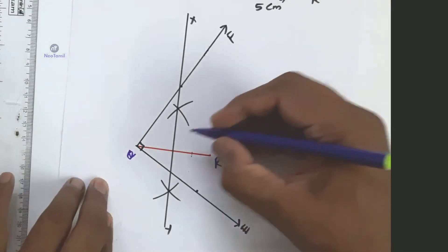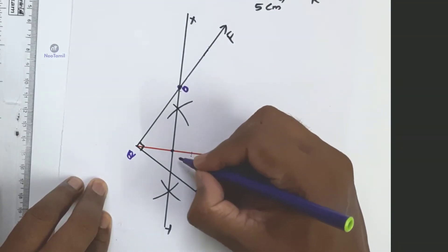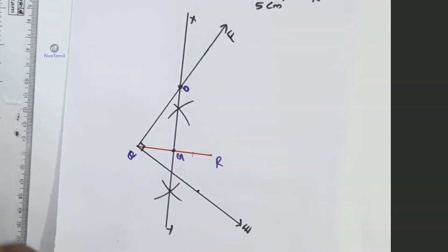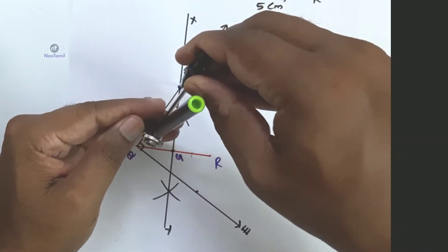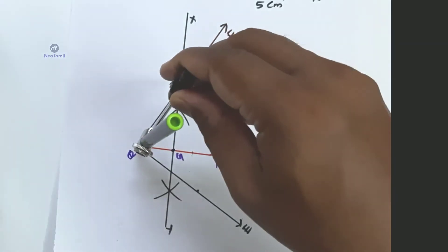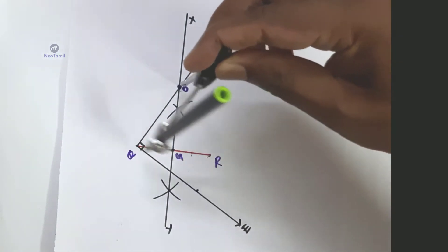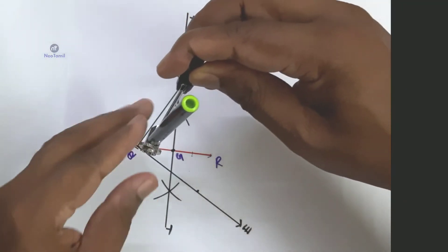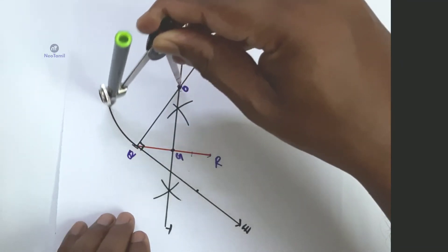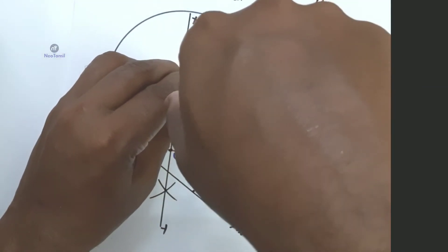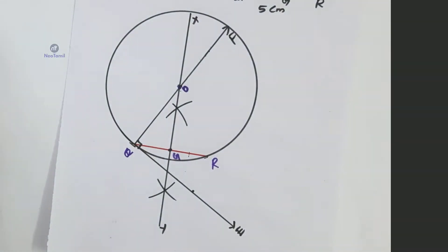In the perpendicular bisector, QF line meets at point O, and QR line meets at point G. With O as the center and OQ as the radius, draw a circle. The circle must pass through Q and R.